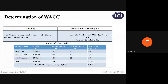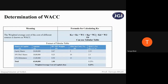Now, how do you find the weighted average cost of capital — the overall cost? There is a formula: you take the individual cost and multiply it with its weight, then add the next individual source of finance multiplied with its weight, and so on. The weighted average cost of the cost of different sources is known as weighted average cost of capital. You can also use a tabular form, which is much simpler and better for presentation.